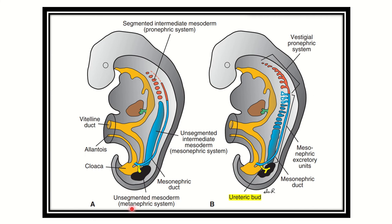In picture A, we can see the unsegmented metanephric kidney. From the mesonephric duct, a tube is derived which forms the excretory system of the kidney. From the kidney, urine production occurs, then the excretory system — including the ureter, major calyx, minor calyx, and renal pelvis — goes downward. The bladder is formed from the cloaca and from the mesonephric duct.